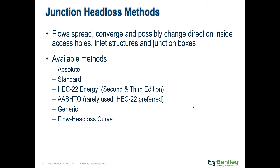Most of the time you don't input individual pipe minor losses directly, because again it's mostly head losses. So where do you put these head losses due to structures? At the structures. You double-click on a manhole or a catch basin, and it asks how you'd like to account for the head losses there. It gives you an array of options: absolute head loss, standard, HEC 22, generic, or enter your own curve — whatever you feel comfortable with.